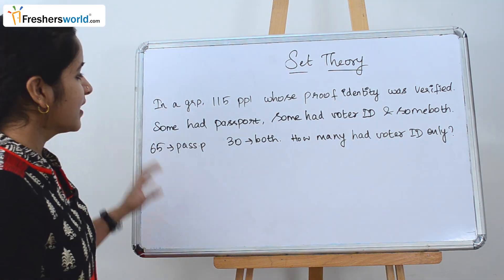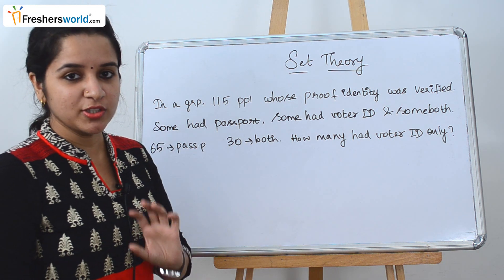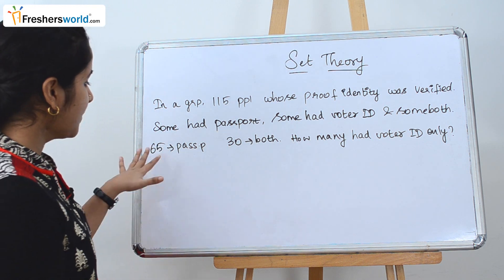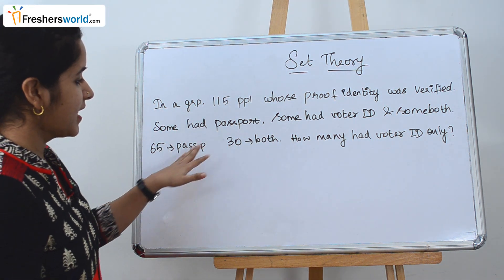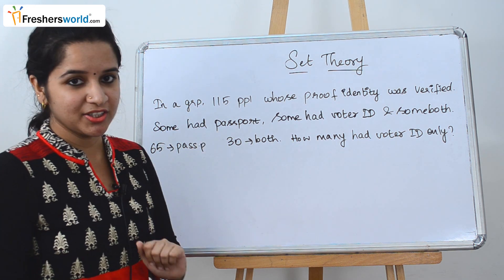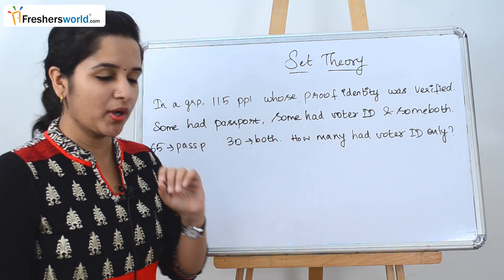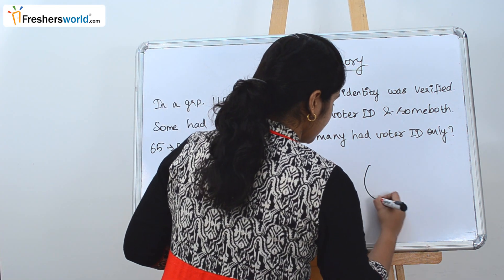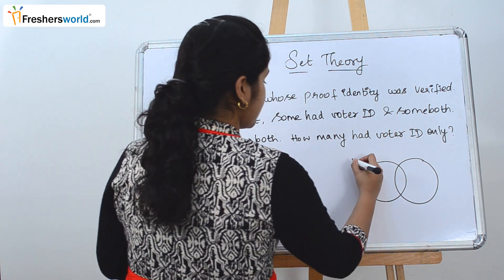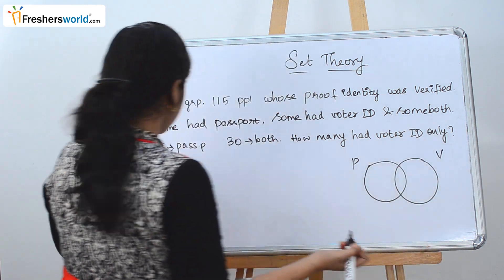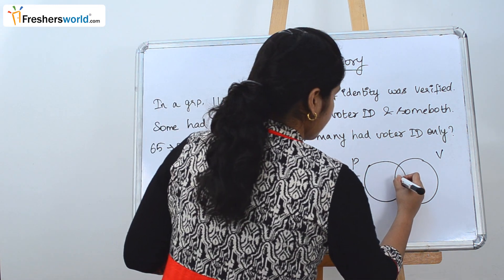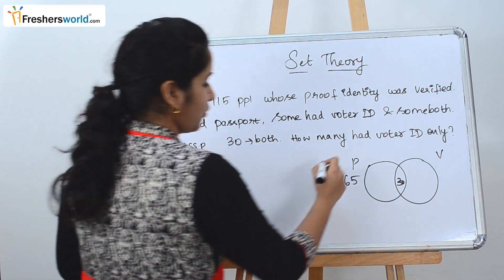The next question: in a group of 115 people, their proof of identity was verified. Some had a passport, some had a voter ID, and some had both. The number of people who had a passport is 65, and the number who had both passport and voter ID is 30. The question is: how many had voter ID only? To understand this, let's draw a Venn diagram — this circle is passport and this is voter ID.